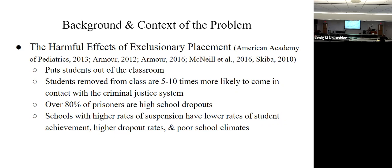When we look at the data for our nation's prisoners, 80% of them are high school dropouts and most of them can't read — they're illiterate. Schools that have higher rates of suspension have lower student achievement because kids can't learn if they're not in the classroom. They have a poor school climate. The message to kids is: if we're going to send you out to exclusionary placement, then we don't want you in our school. You don't belong. You're a bad kid. We've labeled you and we'll ship you out of here.